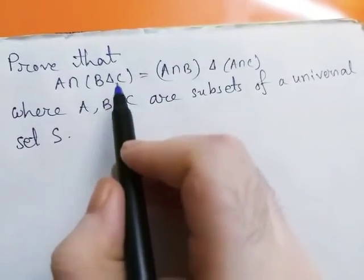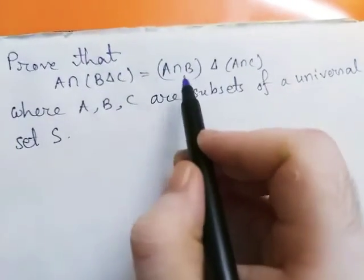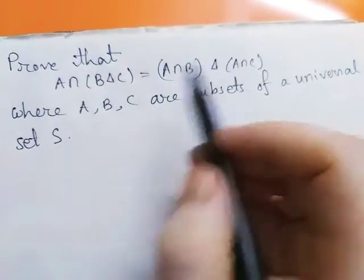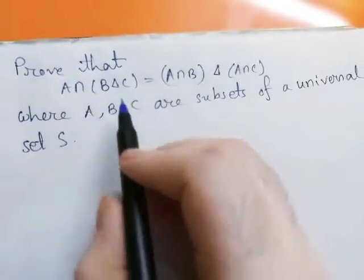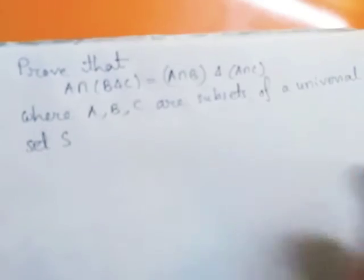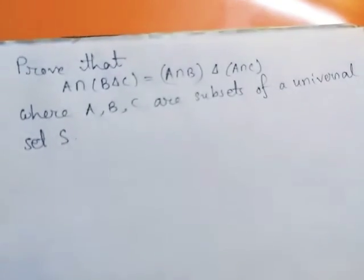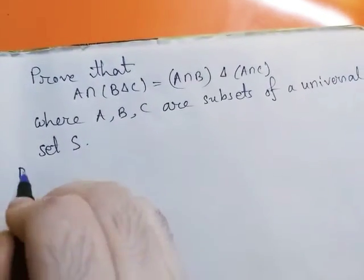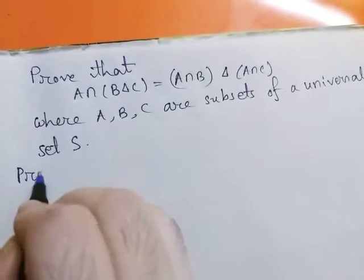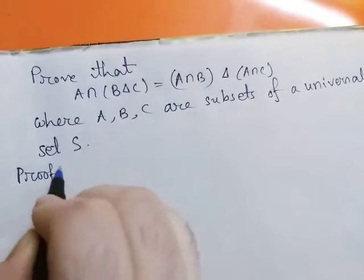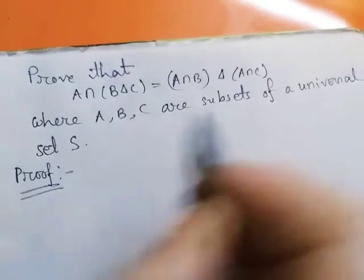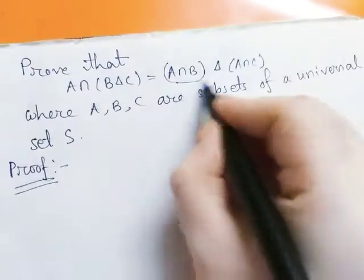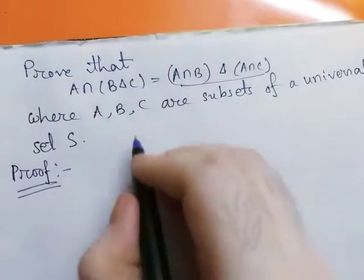Prove that A intersection B delta C equals A intersection B delta A intersection C, where A, B, C are subsets of universal set S. We start with the right hand side.